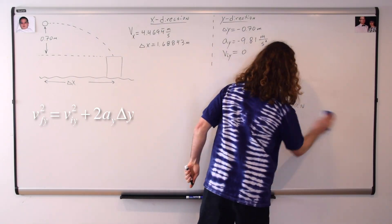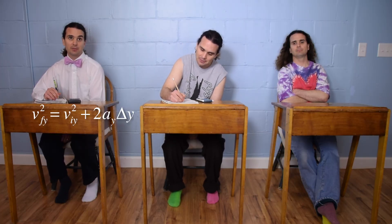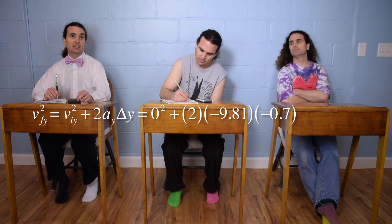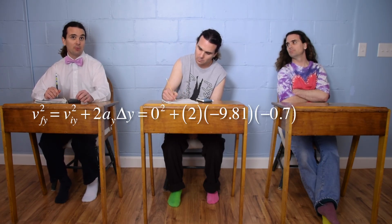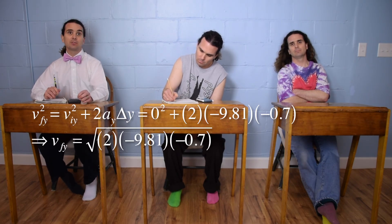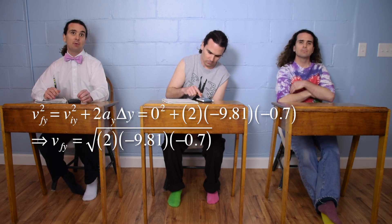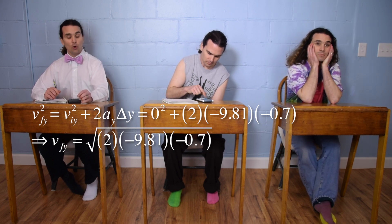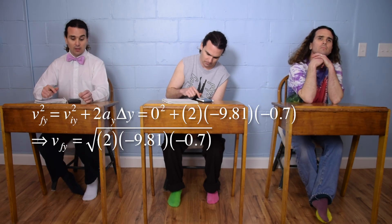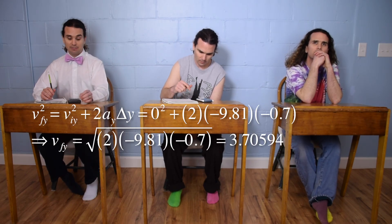Velocity final in the y-direction squared equals velocity initial in the y-direction squared plus two times the acceleration in the y-direction times the change in y-position. We know that the initial velocity in the y-direction is zero, the acceleration in y is negative 9.81, and the displacement in the y-direction is negative 0.7. Taking the square root, we get that the final velocity in the y-direction equals the square root of two times negative 9.81 times negative 0.7, or 3.70594.